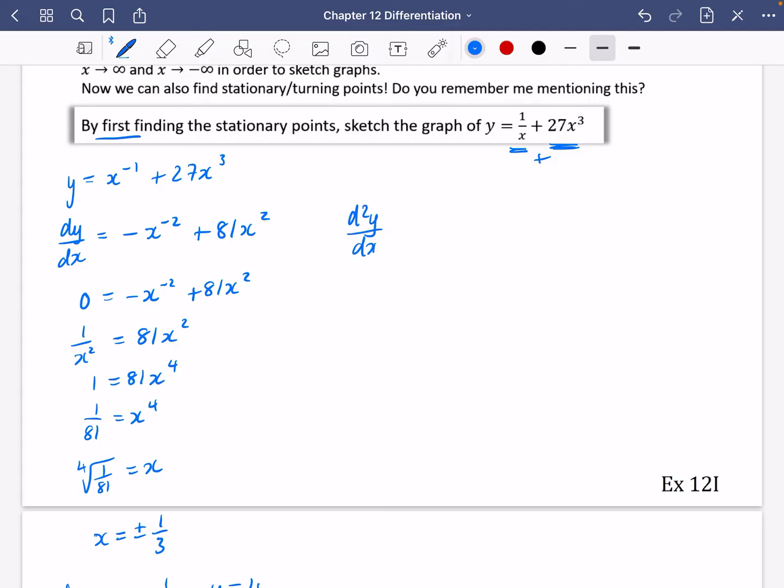So I'm going to do the second derivative. I'm going to take this thing here and differentiate it. So I've got minus times minus two, which is plus two. And it's going to reduce from minus two to minus three. 81 times by the two is 162x.